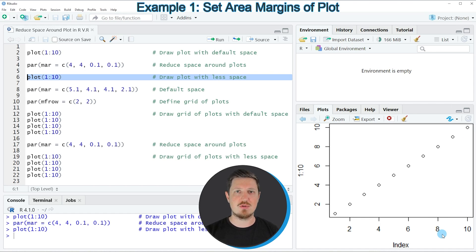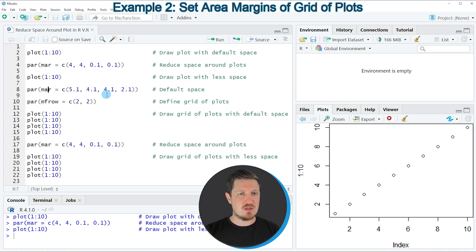However, it's also possible to use the par function to reduce the space around a layout of multiple plots. And this is what I want to show you in the second example. In order to start this example, we first need to reset our par options, as you can see in line 8. After running this line of code, the options for the plotting window are reset.